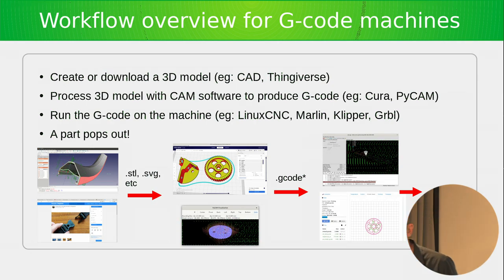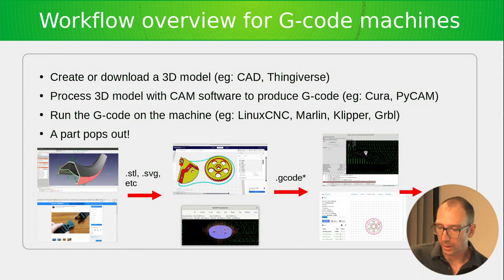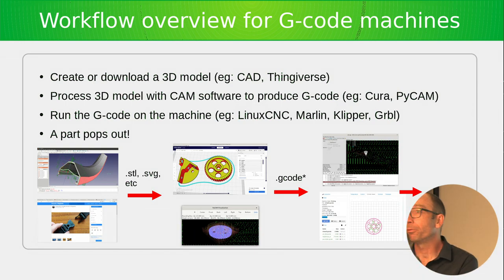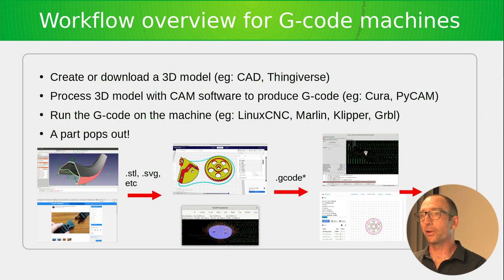Once the machine is done producing the part, there is often some human input needed to finalize it — post-processing such as removing supports for additive, or deburring, sanding, and final polishing for subtractive parts. That's the rough overview of the stack.